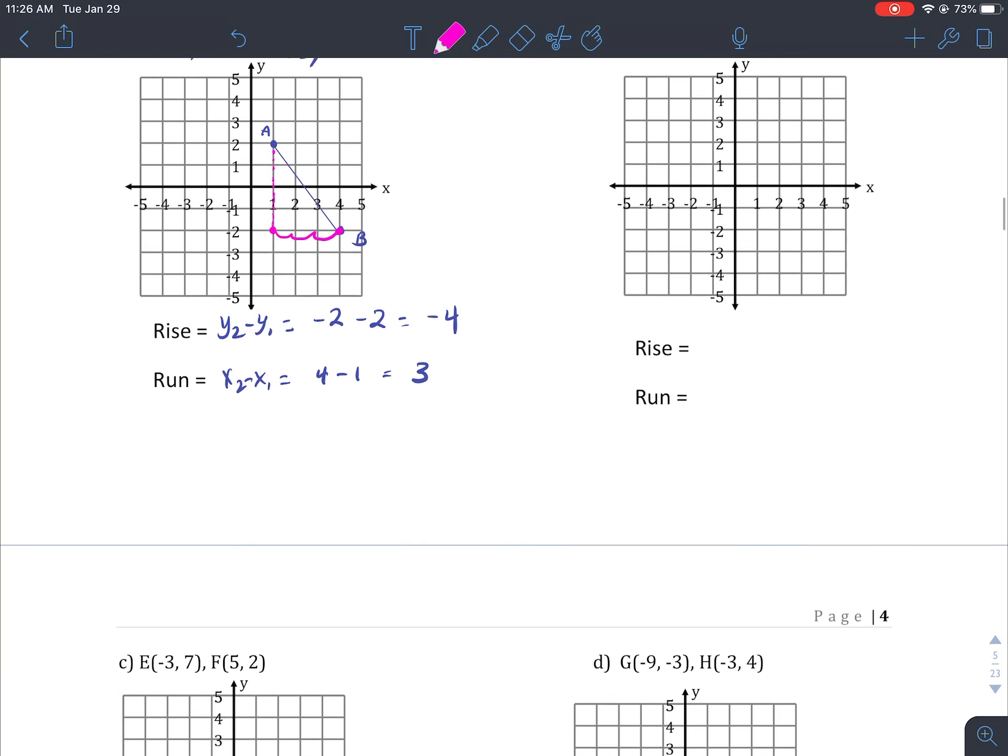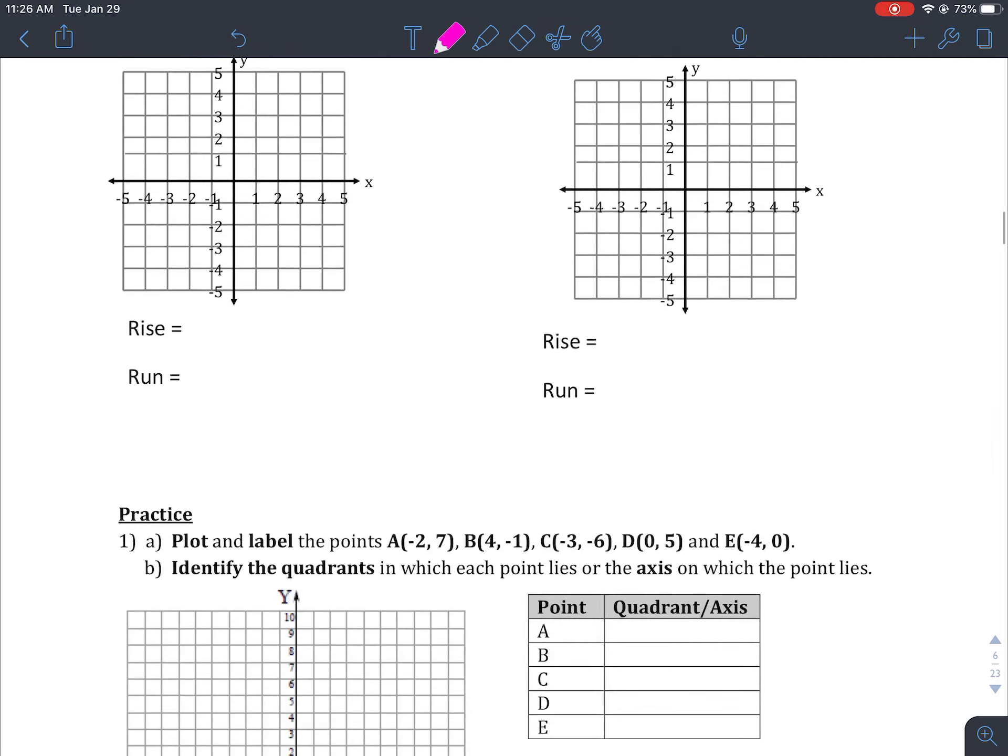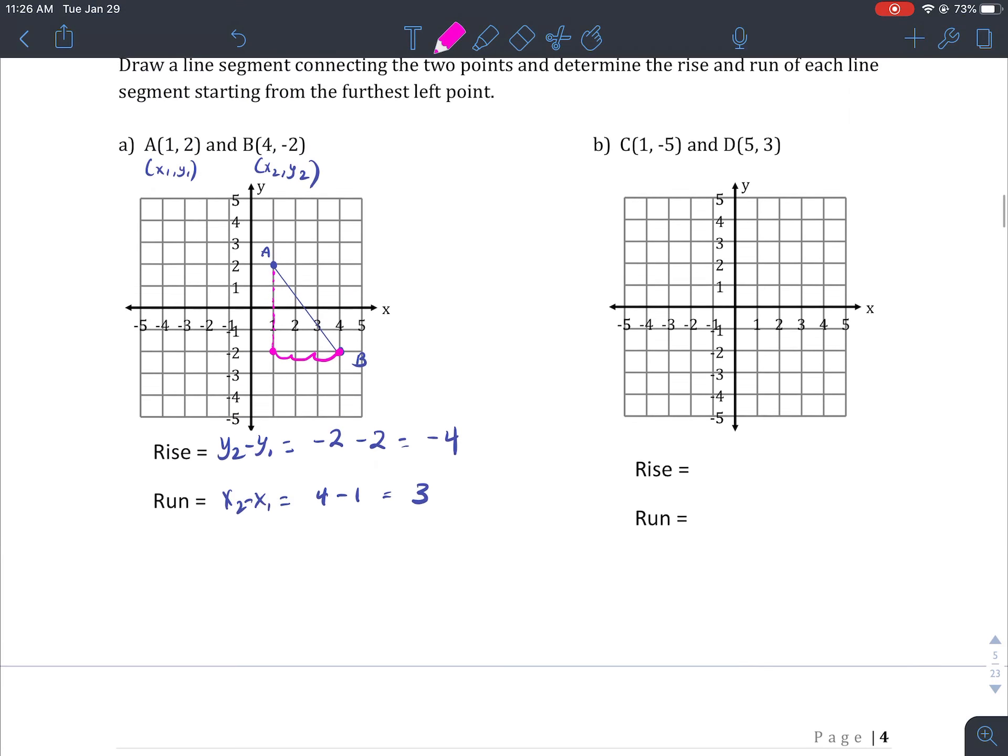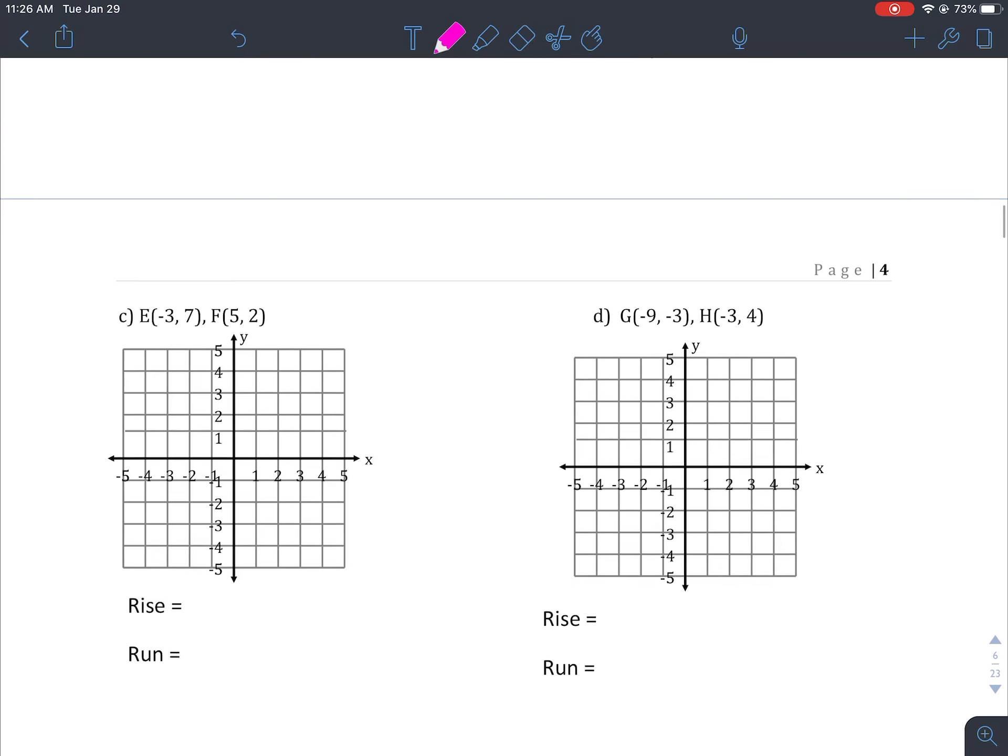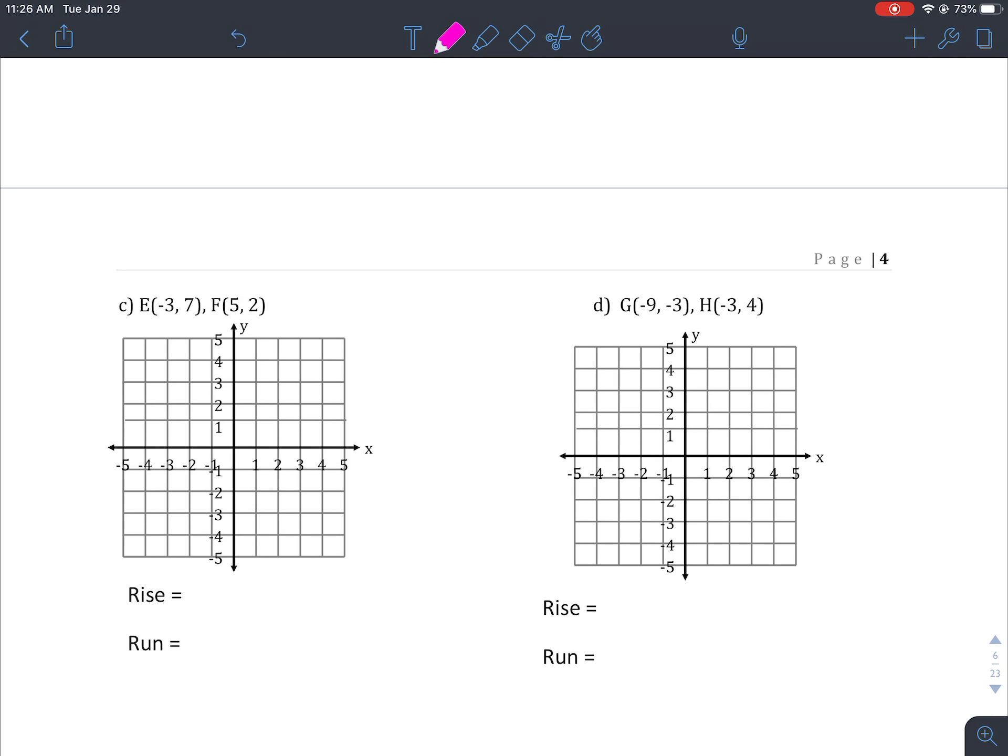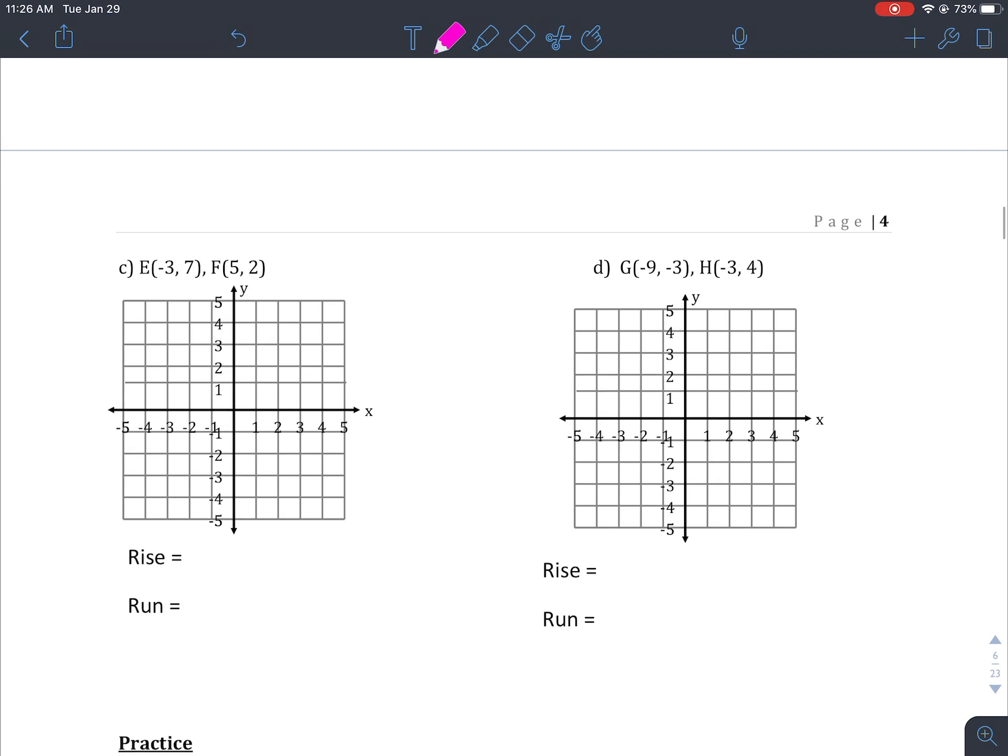So my rise is negative 4, means I go down 4 units, my run is 3, we're going to go to the right, 3 units. Okay, we'll do one more, maybe we'll do the last one here. So we'll do letter D, I'll leave you with B and C to try on your own.